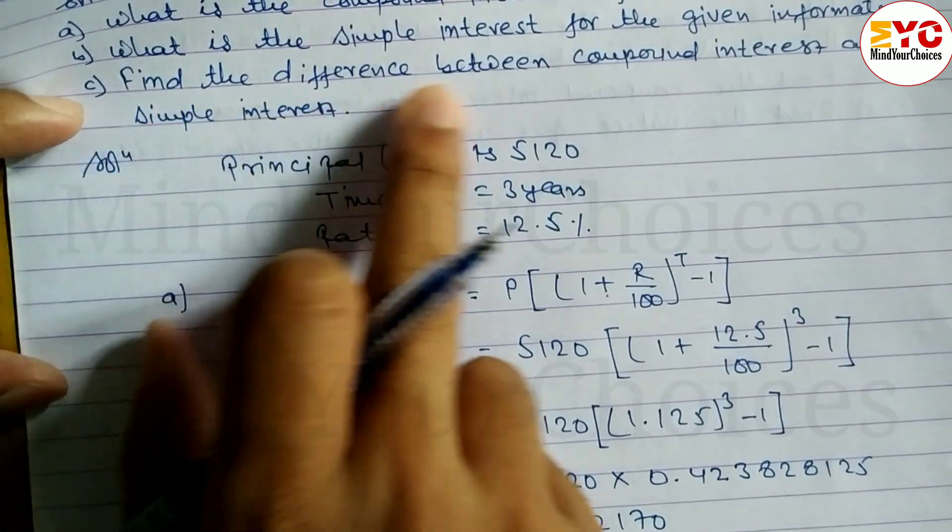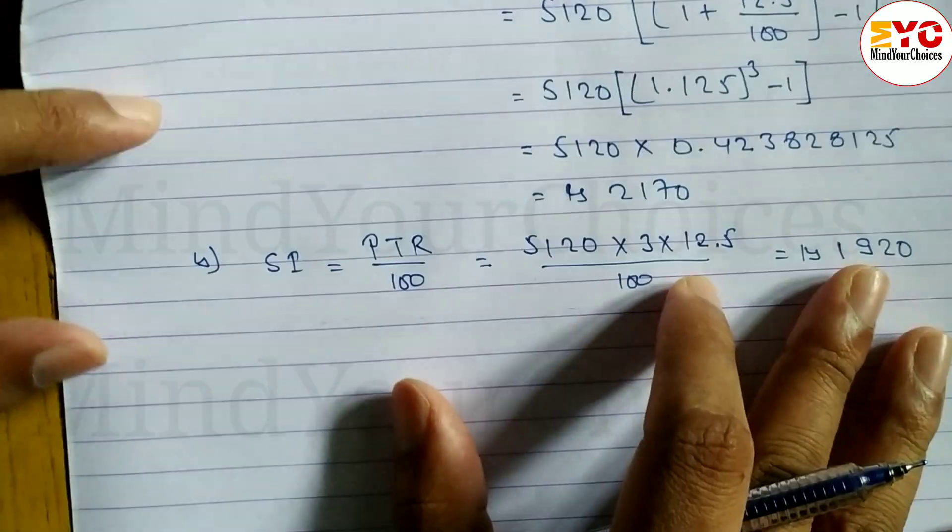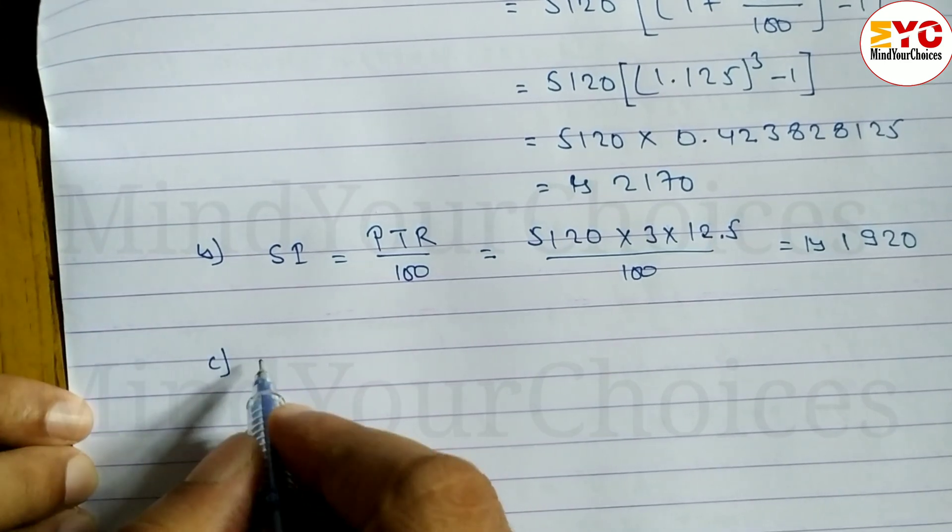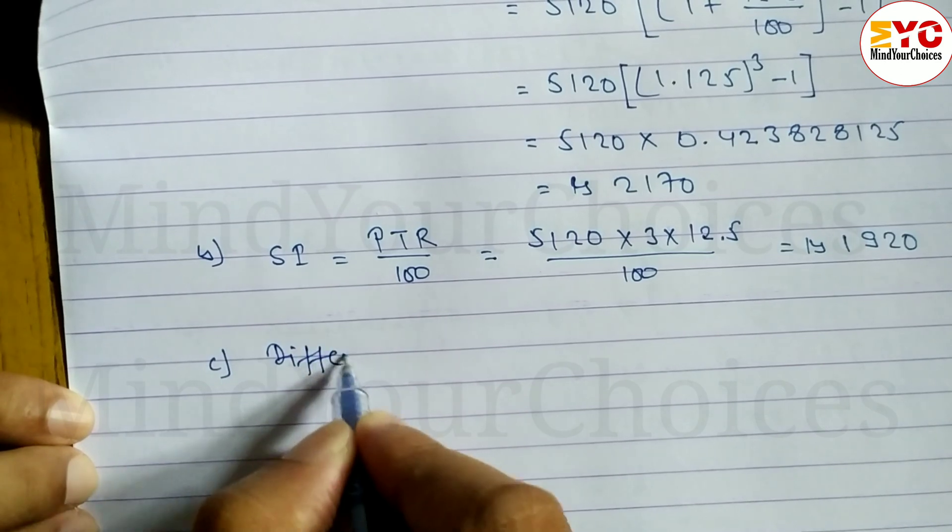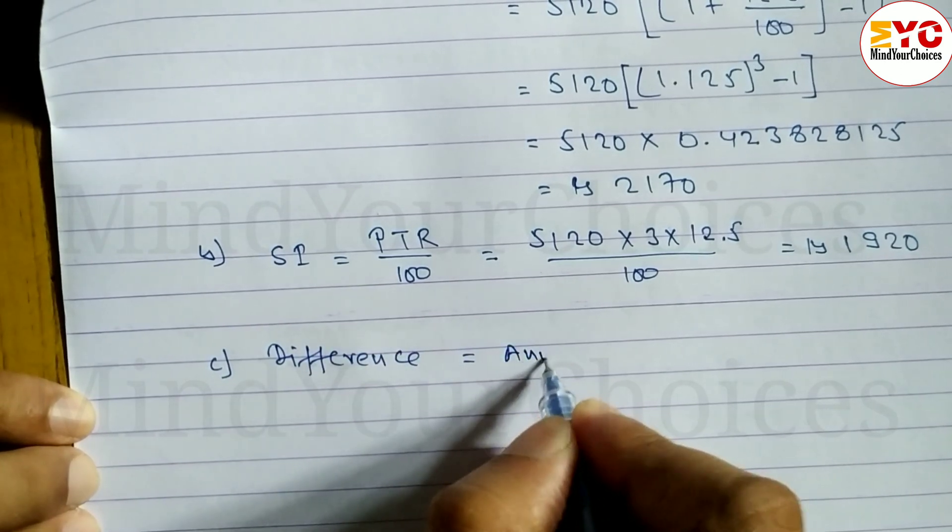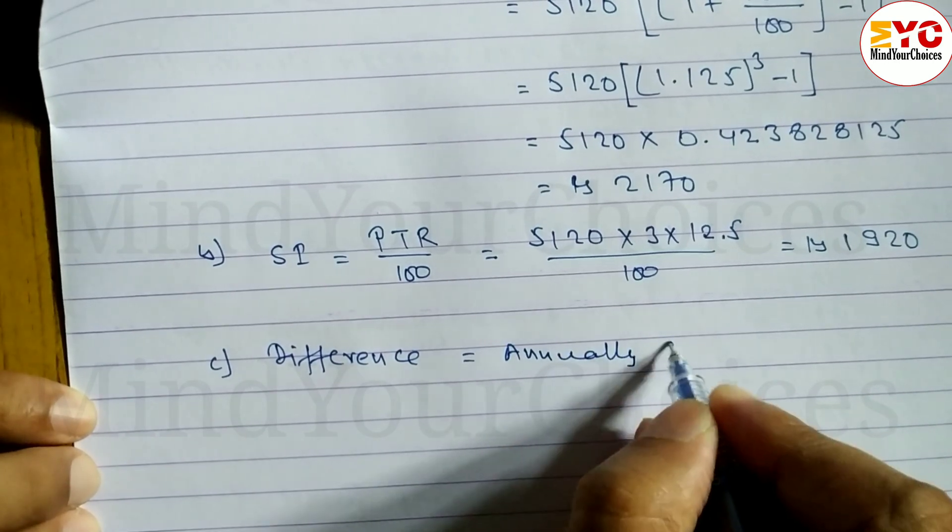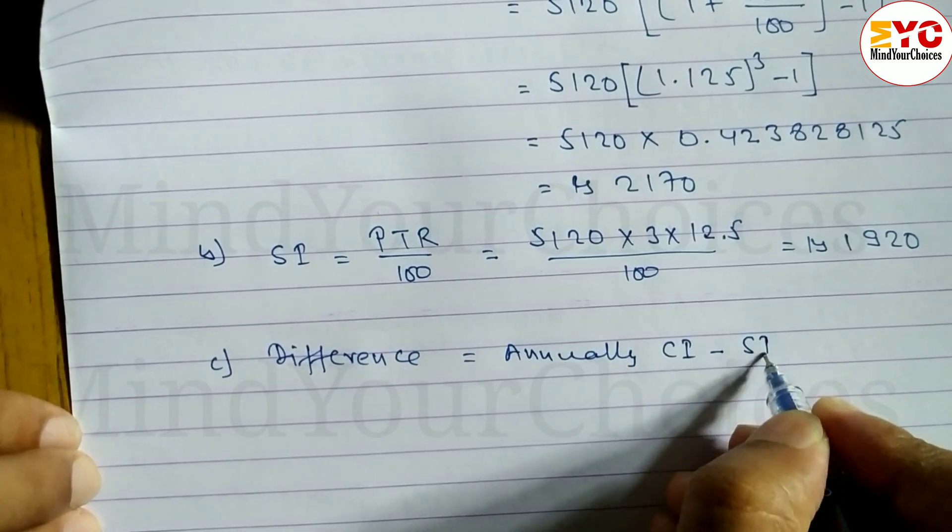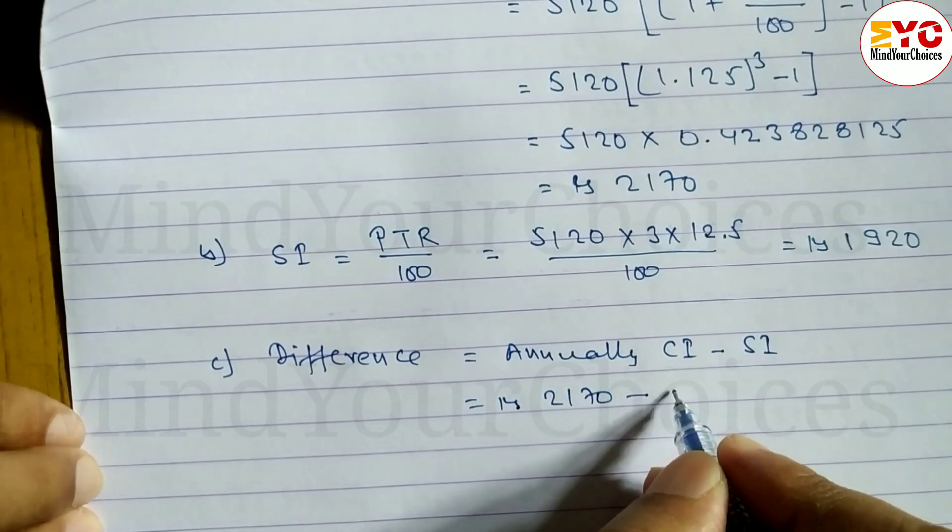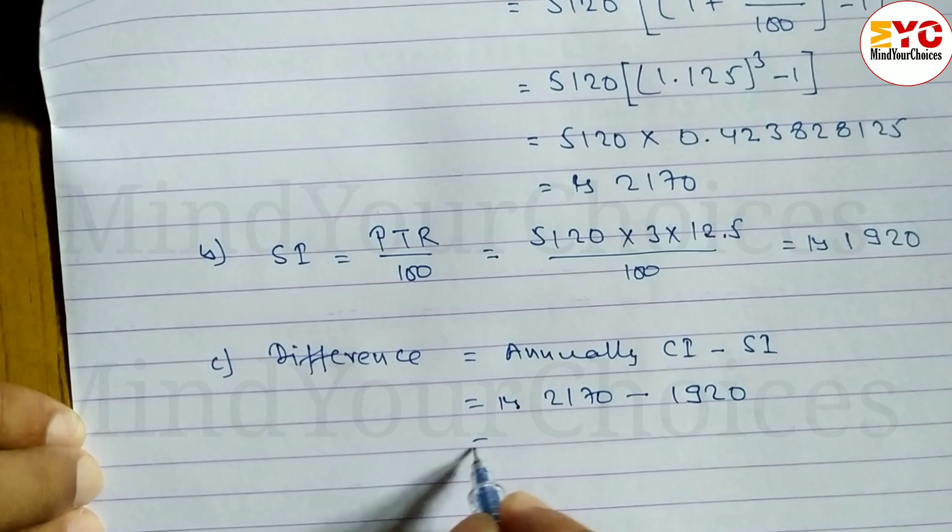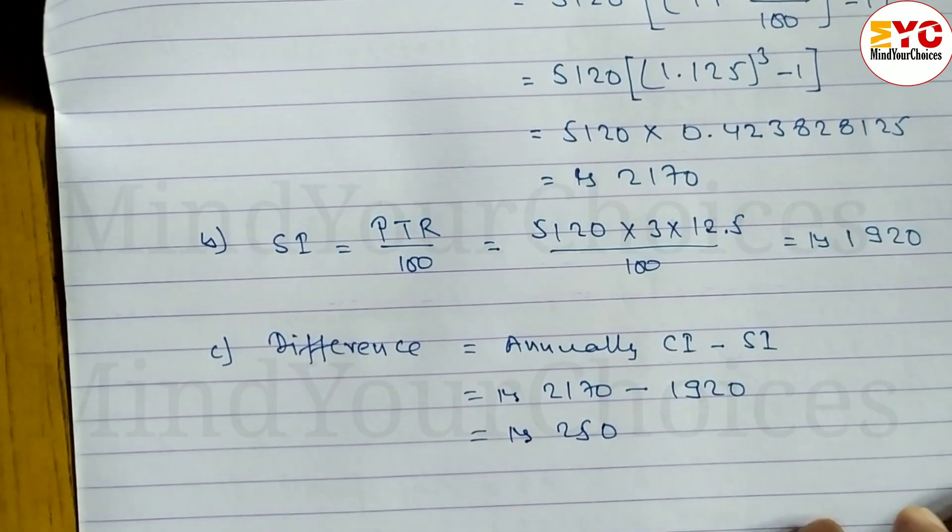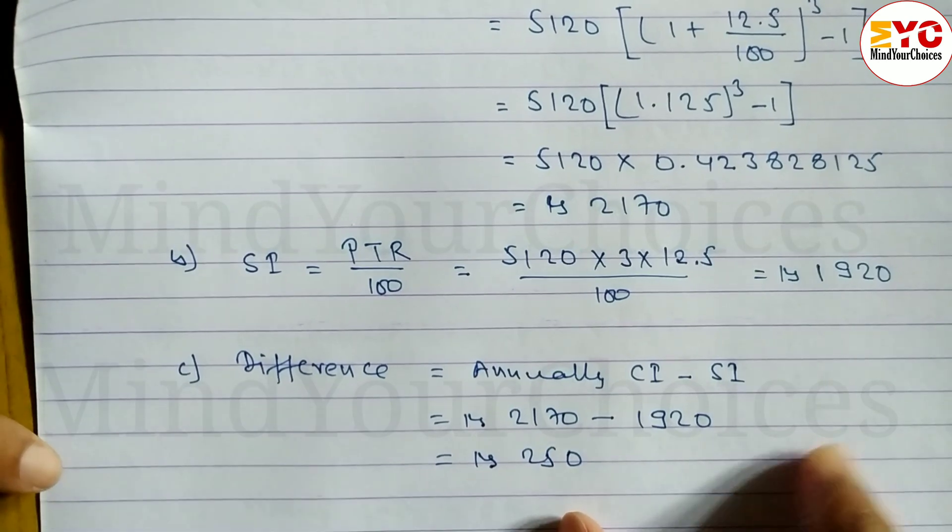Question C: Find the difference between compound interest and simple interest. Difference equals annual CI minus SI, which is Rs. 2,170 minus 1,920. When you calculate and subtract, you get 250. So the difference is Rs. 250.